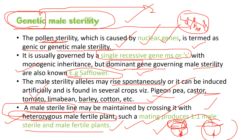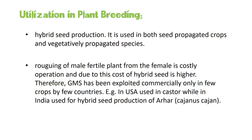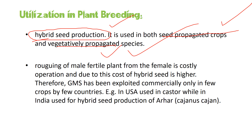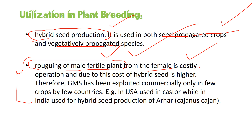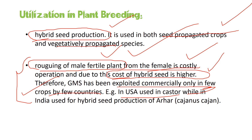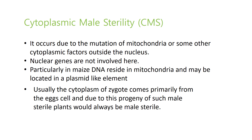This is how the male sterile line is conserved, and restoration of fertility is also required. It is always used in hybrid seed production and is applicable in both seed-propagated and vegetatively propagated crops. However, it poses a difficult limitation: rogueing male fertile plants from the females is very costly, making the seeds expensive. Therefore, genetic male sterility has been exploited commercially only in a few countries — in the USA it is used in castor, and in India in cajanus cajun (pigeonpea).